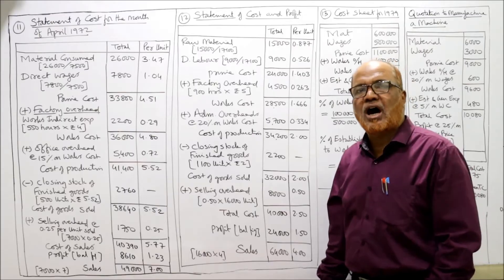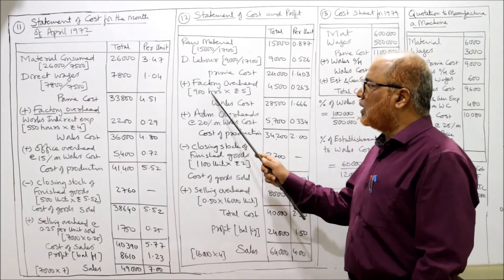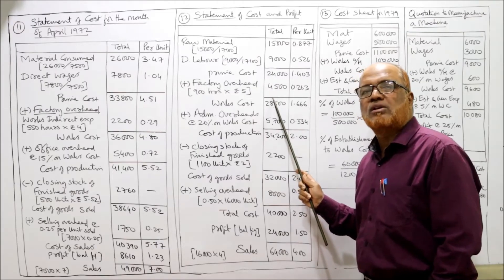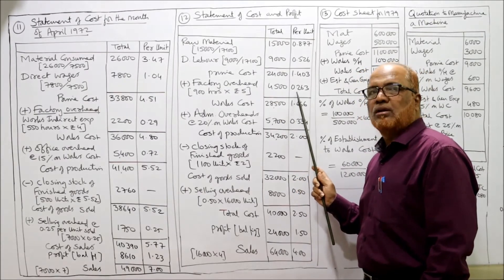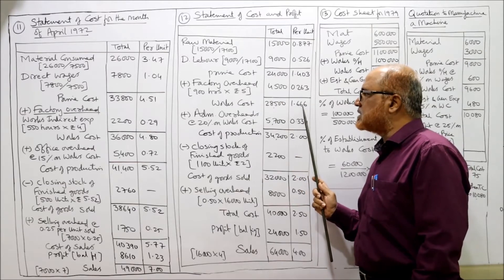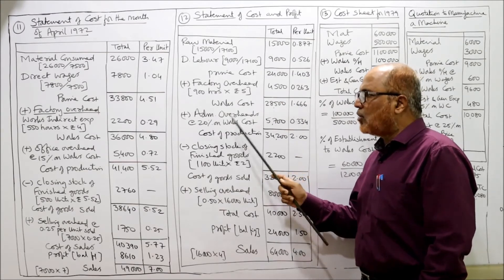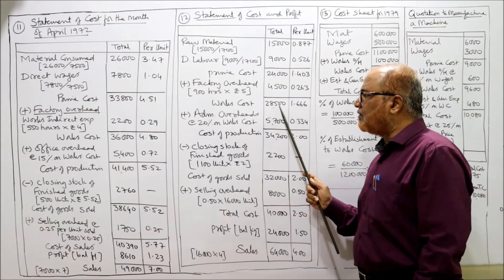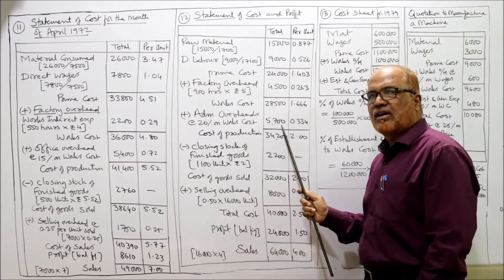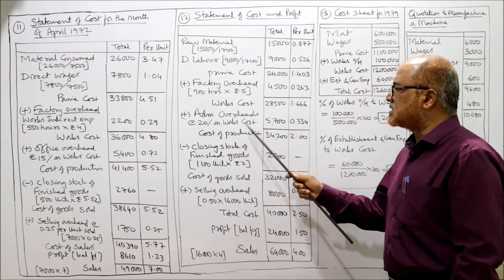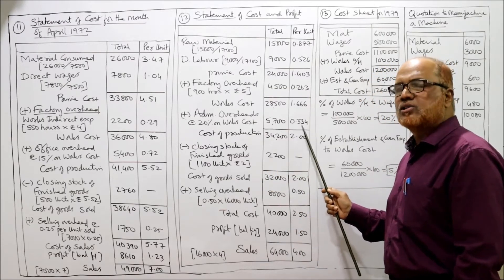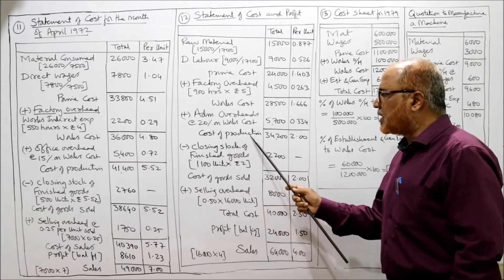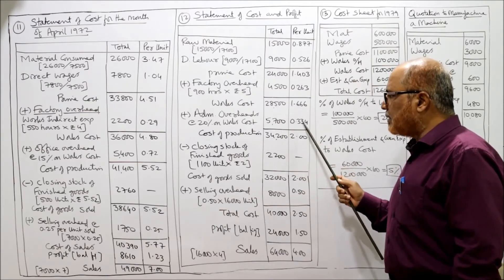Factory overhead: 900 machine hours × 5 rupees = 4,500. Per unit: 4,500 ÷ 17,100 = 0.263. Works cost total 28,500 at 1.666 per unit. Administrative overhead is 20% on works cost: 28,500 × 20% = 5,700. Per unit: 1.666 × 20% = 0.334 (rounded). Cost of production total 34,200 at 2.00 per unit.